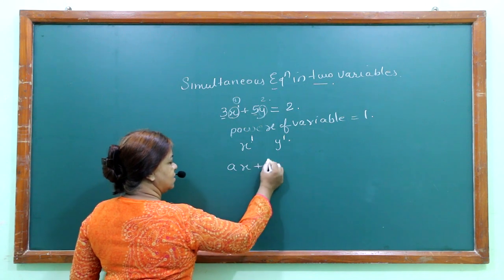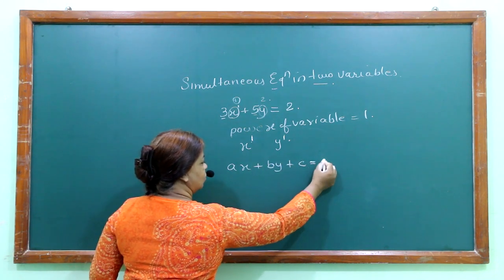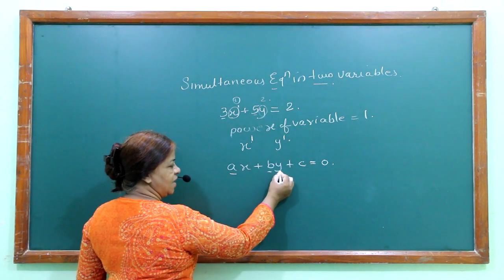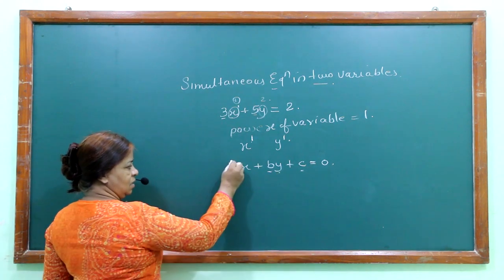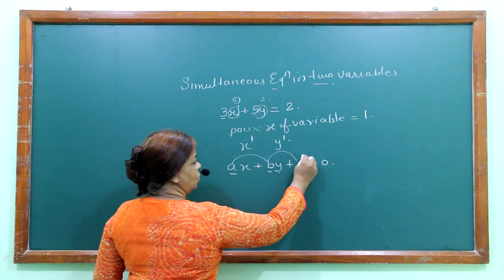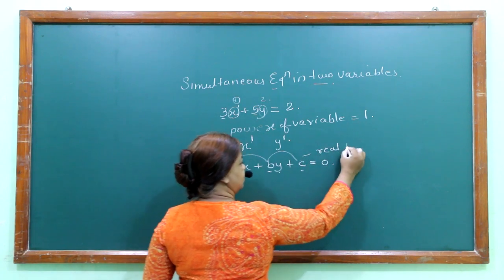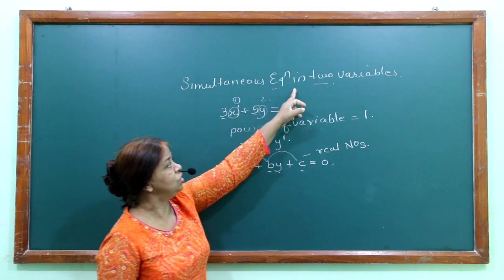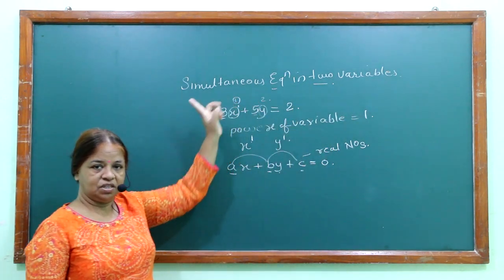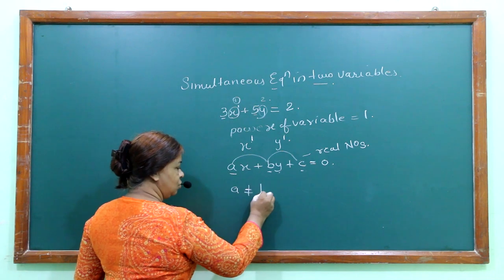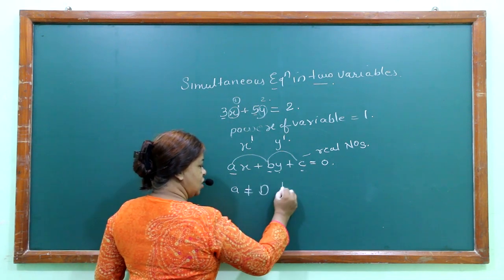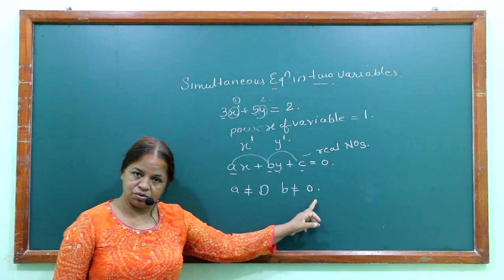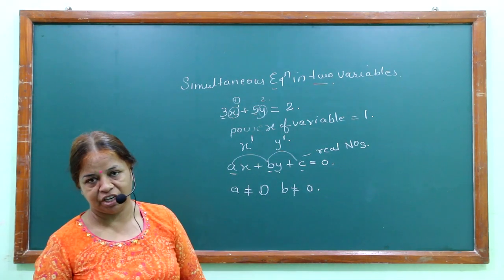In the general form ax plus by plus c equals 0: a is the coefficient of x, b is the coefficient of y, and c is a constant number. A, b, and c are all real numbers. For it to be a simultaneous equation in 2 variables, a should never be equal to 0 and b should never be equal to 0. If both a and b equal 0, it can never be a simultaneous equation in 2 variables.